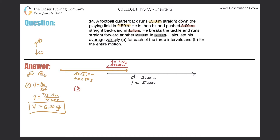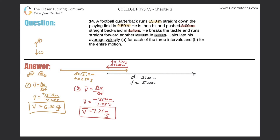Part two: he gets pushed back 3 meters and it took 1.75 seconds. Average velocity equals displacement divided by time. The object is moving to the left, so the displacement is negative: negative 3.00 meters divided by 1.75 seconds. That comes out to negative 1.71 meters per second.